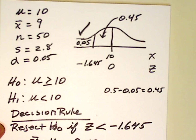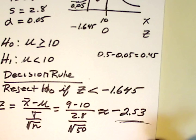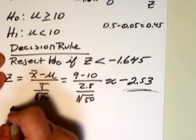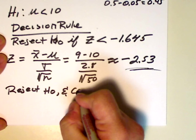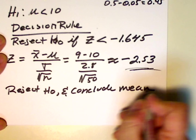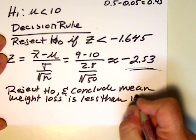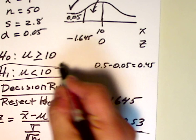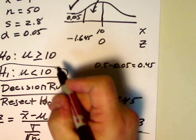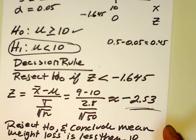It falls squarely into this tail. Our decision rule is to reject the null if z is less than negative 1.645. Well, z is certainly less than negative 1.645, so we're going to reject the null. Our conclusion is: we reject H naught and conclude the mean weight loss is less than 10 pounds — after all, that's what we have in the alternate — and we're rejecting the null that the mean weight loss is greater than or equal to 10.